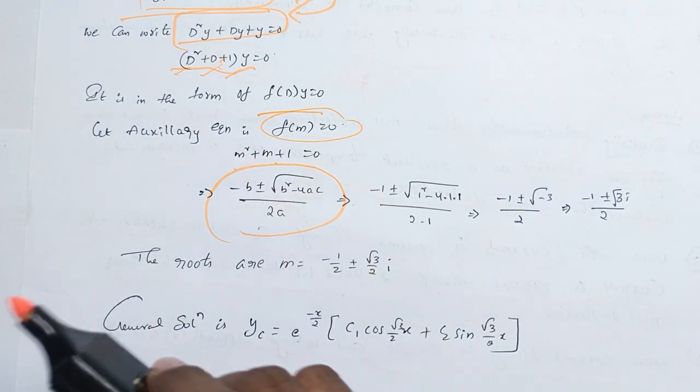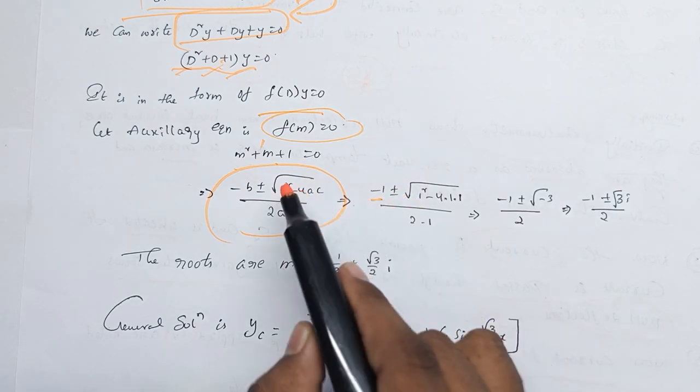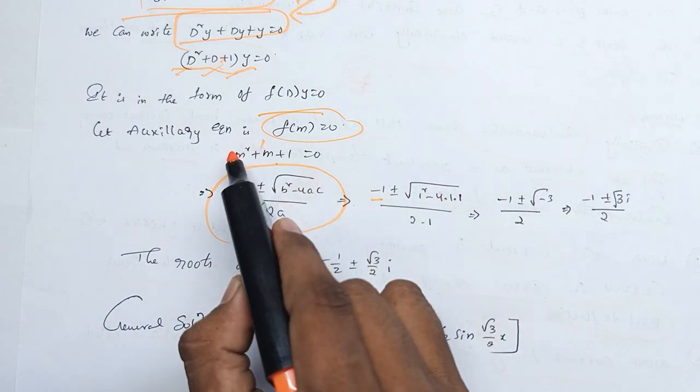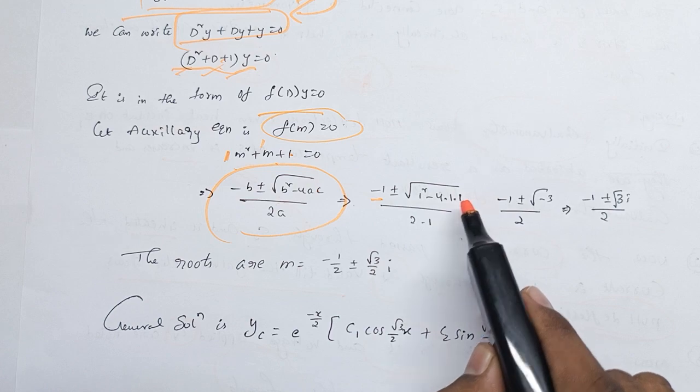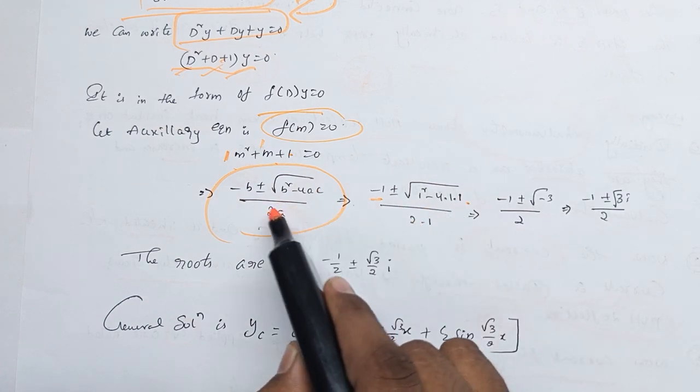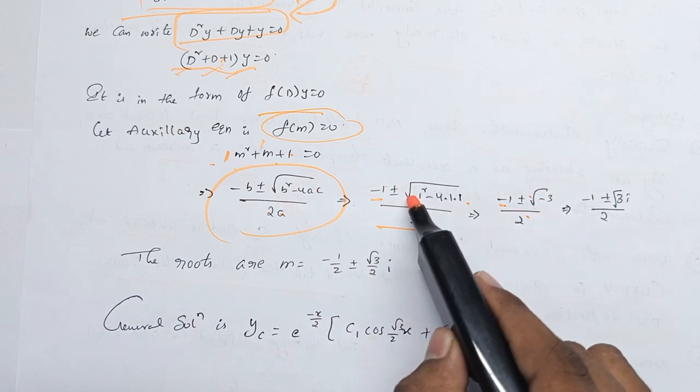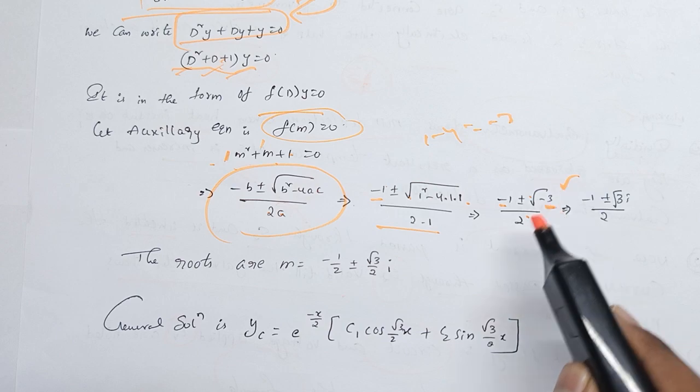So m = (-1 ± √(1² - 4·1·1)) / 2·1 = (-1 ± √(1 - 4)) / 2 = (-1 ± √(-3)) / 2.